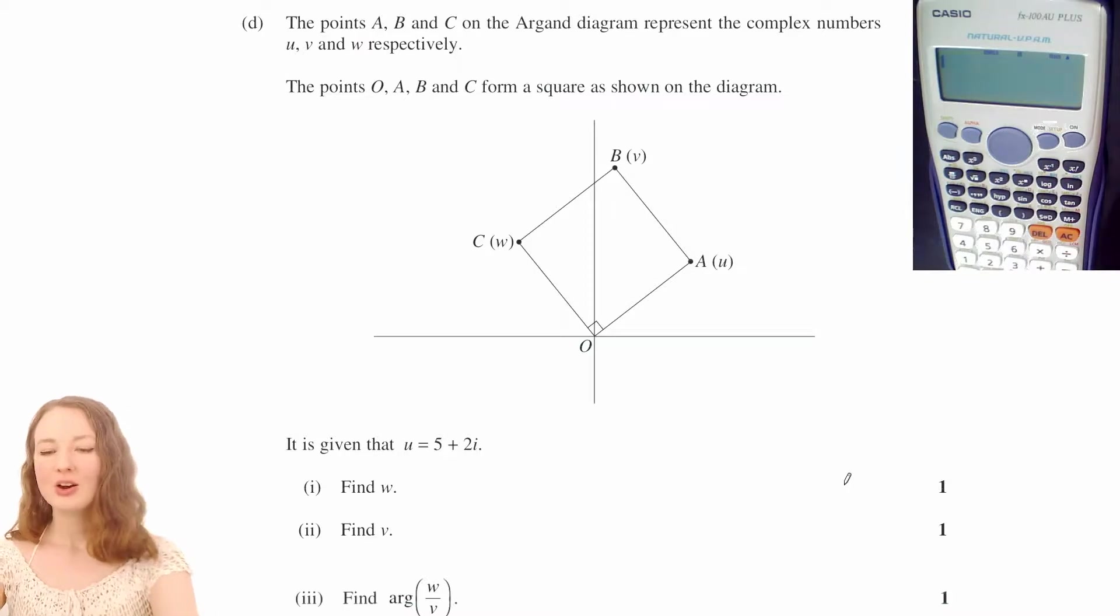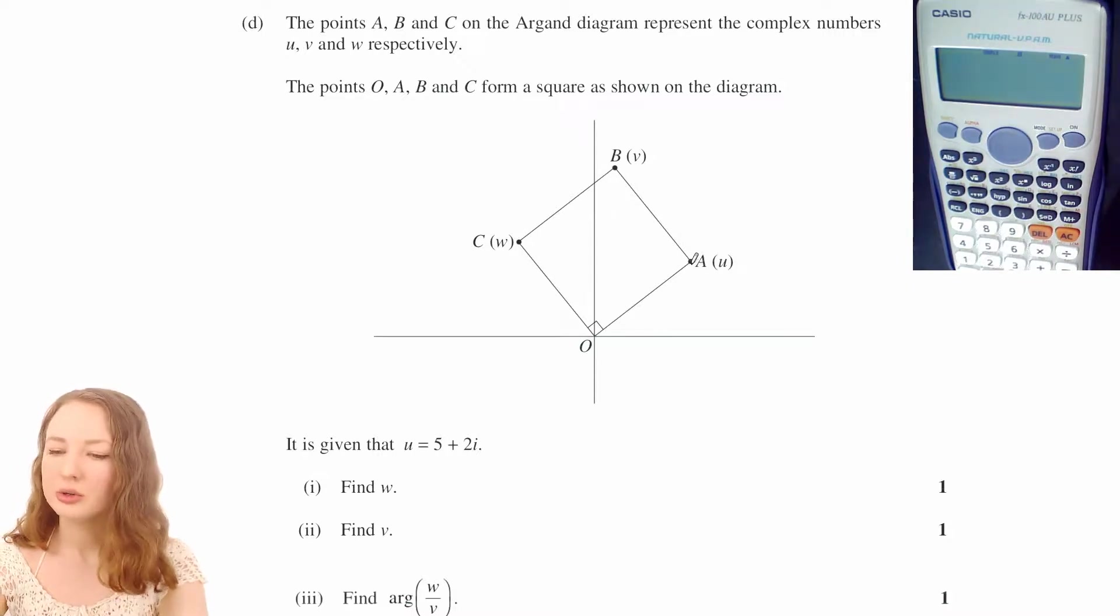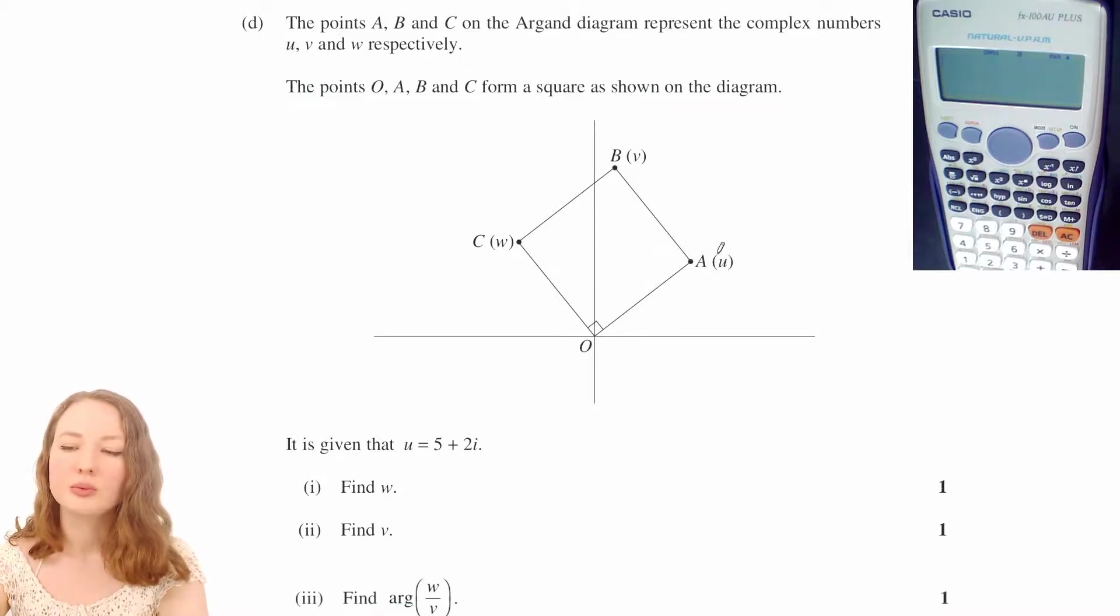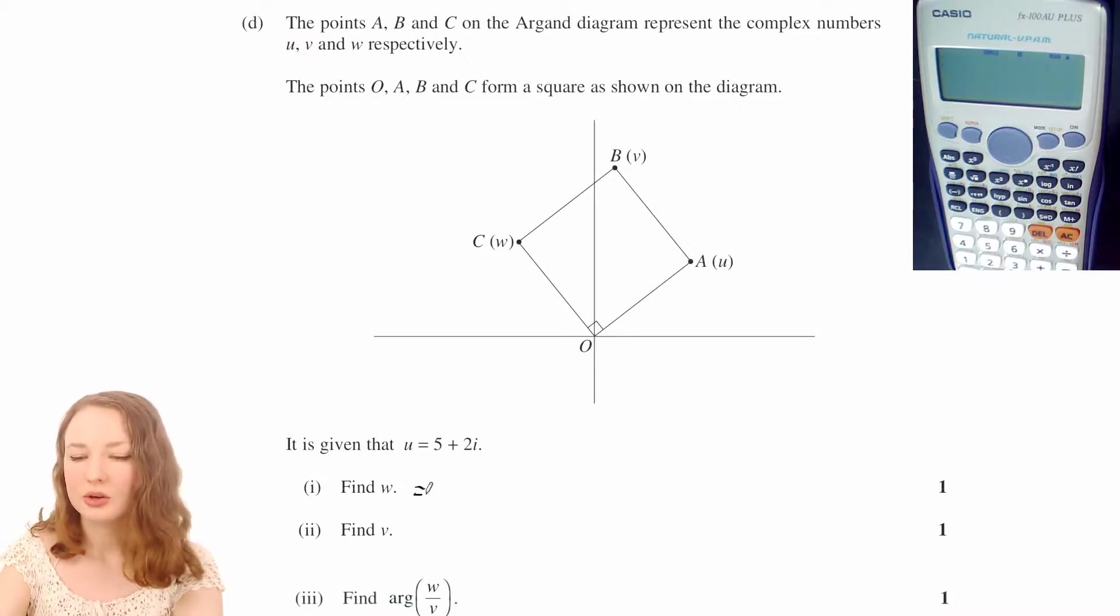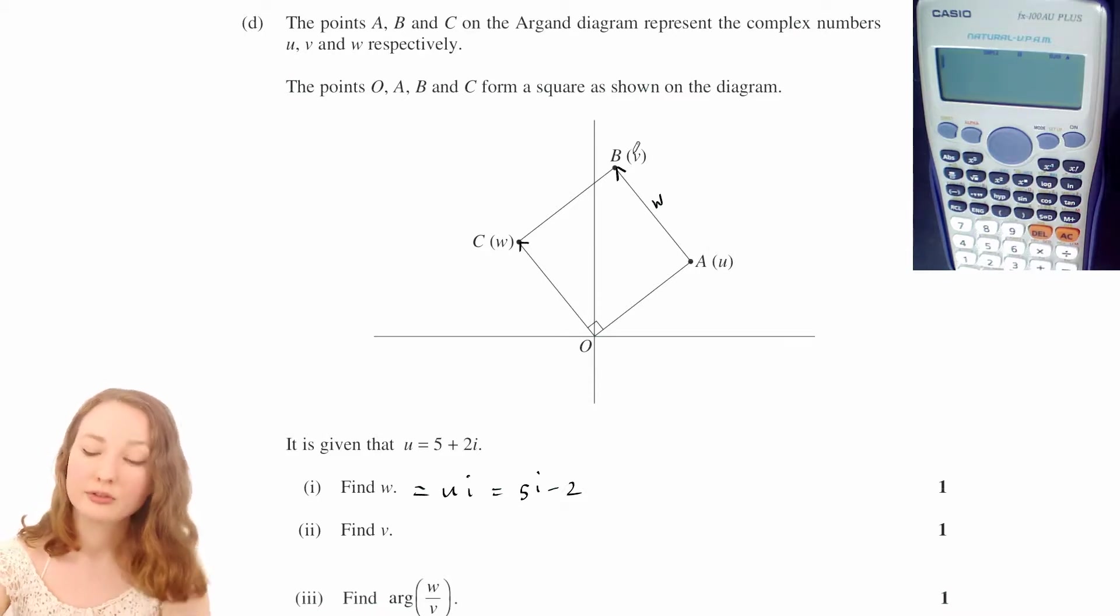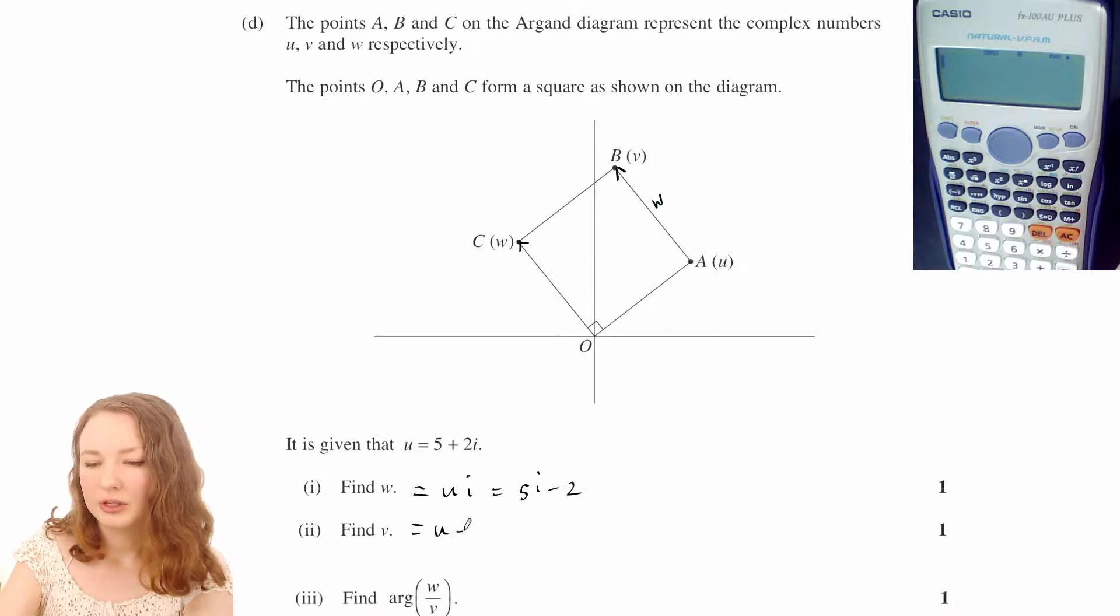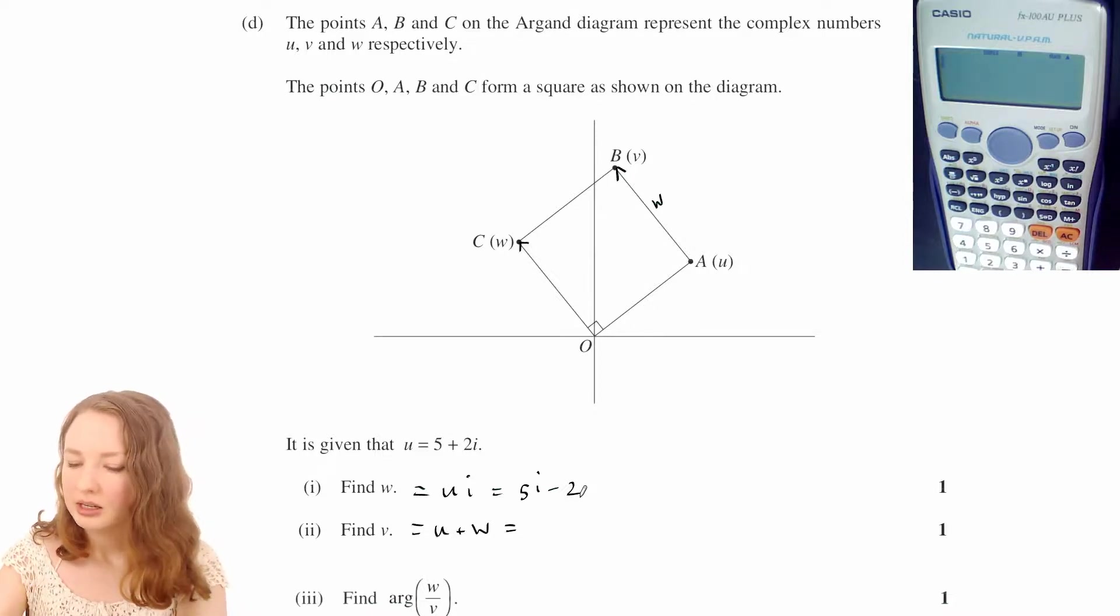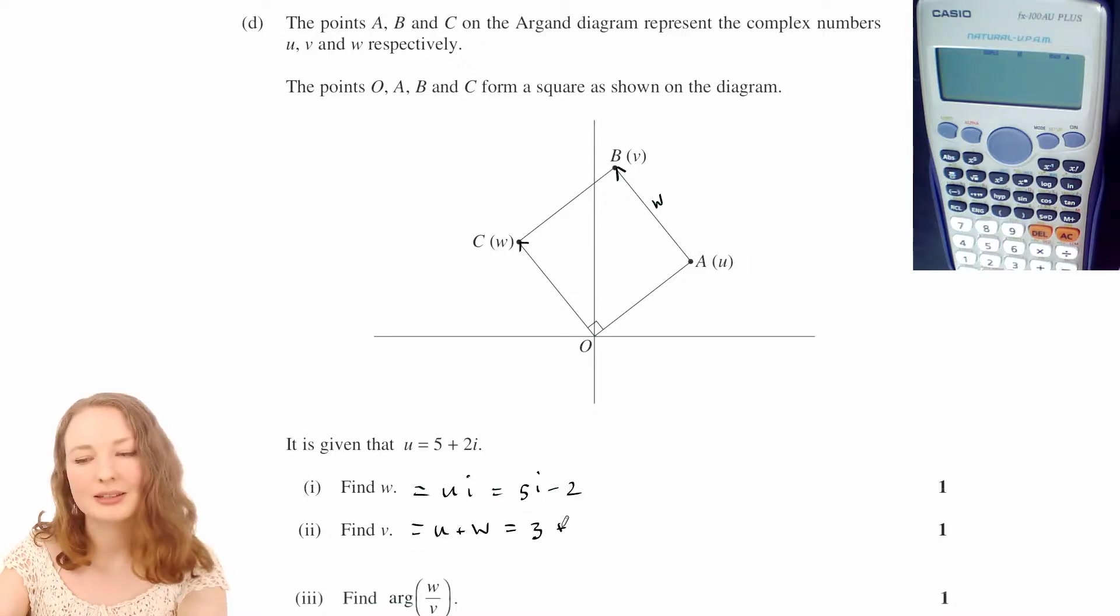Part D. Okay, to find w, which is that vector on the graph, it's just u rotated by 90 degrees, which if we're doing complex numbers is just u multiplied by i. So you can say it's u times i, which is going to make 5i minus 2. And then to find v, well v is just the u vector plus the w vector. If you add w on there, you're going to get v. So u plus w, that one plus that one is going to make 3 plus 7i.